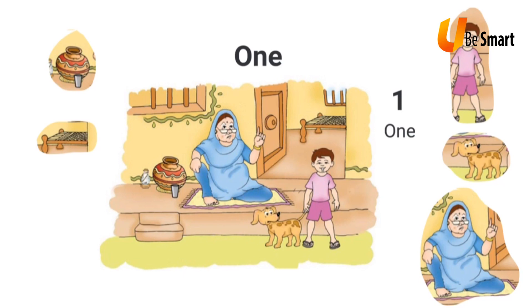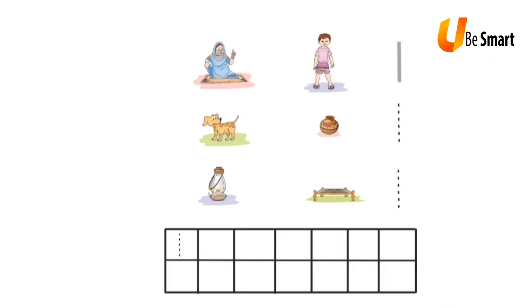And I have one lantern in this picture. So, here I see 1 boy, 1 pot, 1 cot, 1 lantern, 1 dog, and 1 grandmother. How do I write 1? I draw a standing line like this.